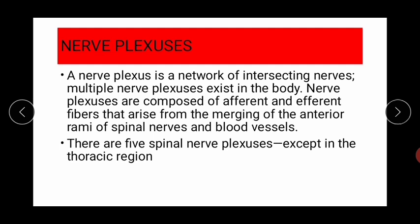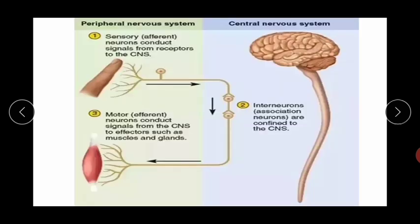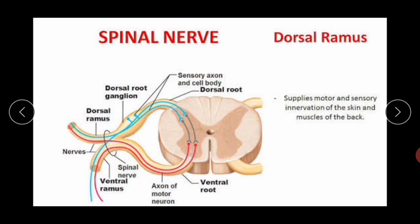There are five spinal nerve plexuses, except in the thoracic region. Looking at a cross-section of the spinal cord, the middle portion is gray matter and the outer portion is white matter. From the spinal cord arise the dorsal root and ventral root. The spinal nerve exits and then divides into branches called the dorsal ramus and ventral ramus.